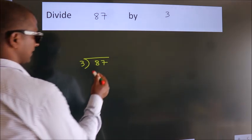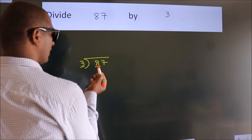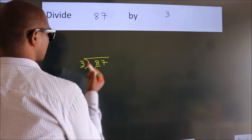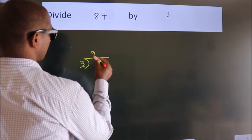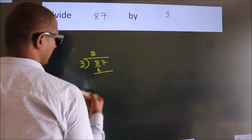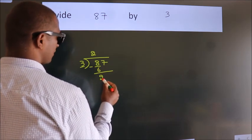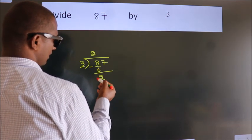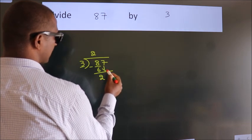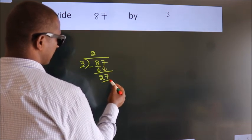Here we have 8, here 3. A number close to 8 in the 3 times table is 3 twos are 6. Now we subtract and we get 2. After this, bring down the beside number — so 7 down, giving us 27.